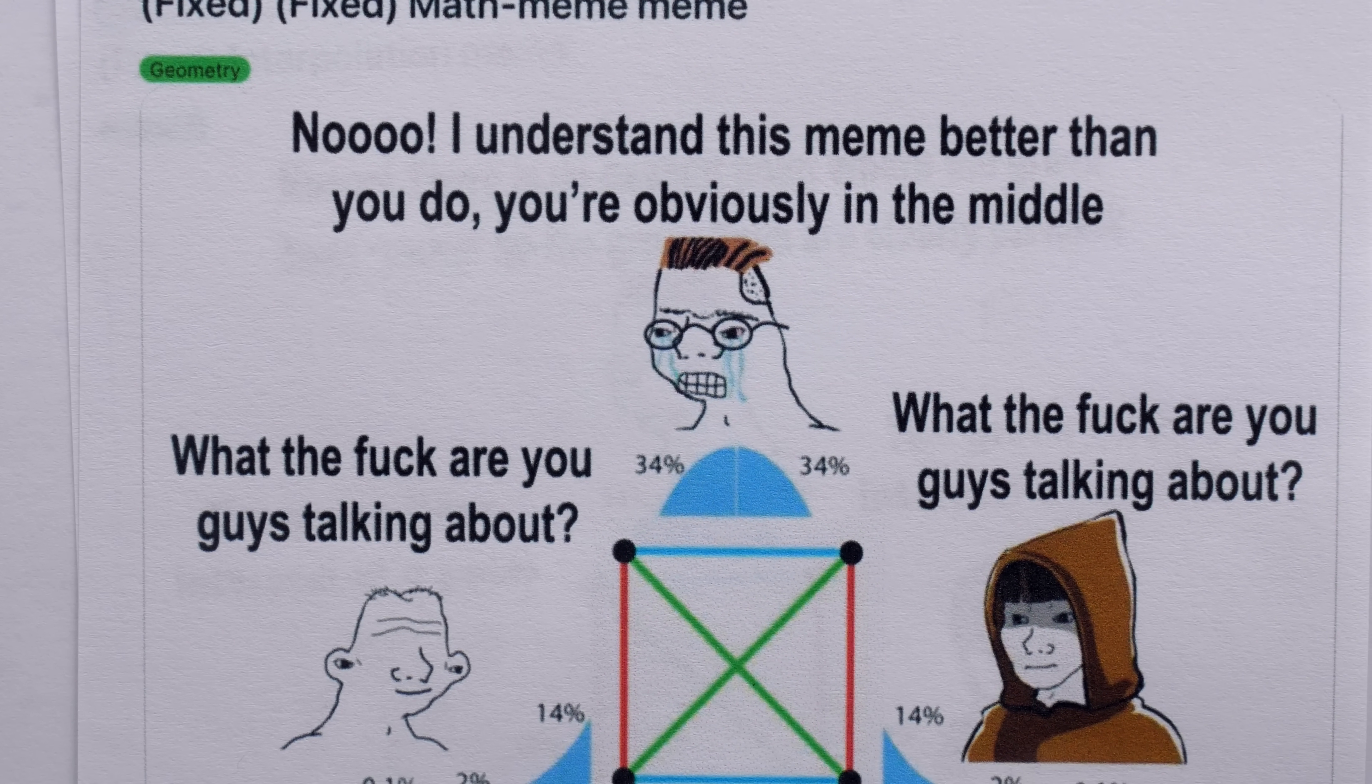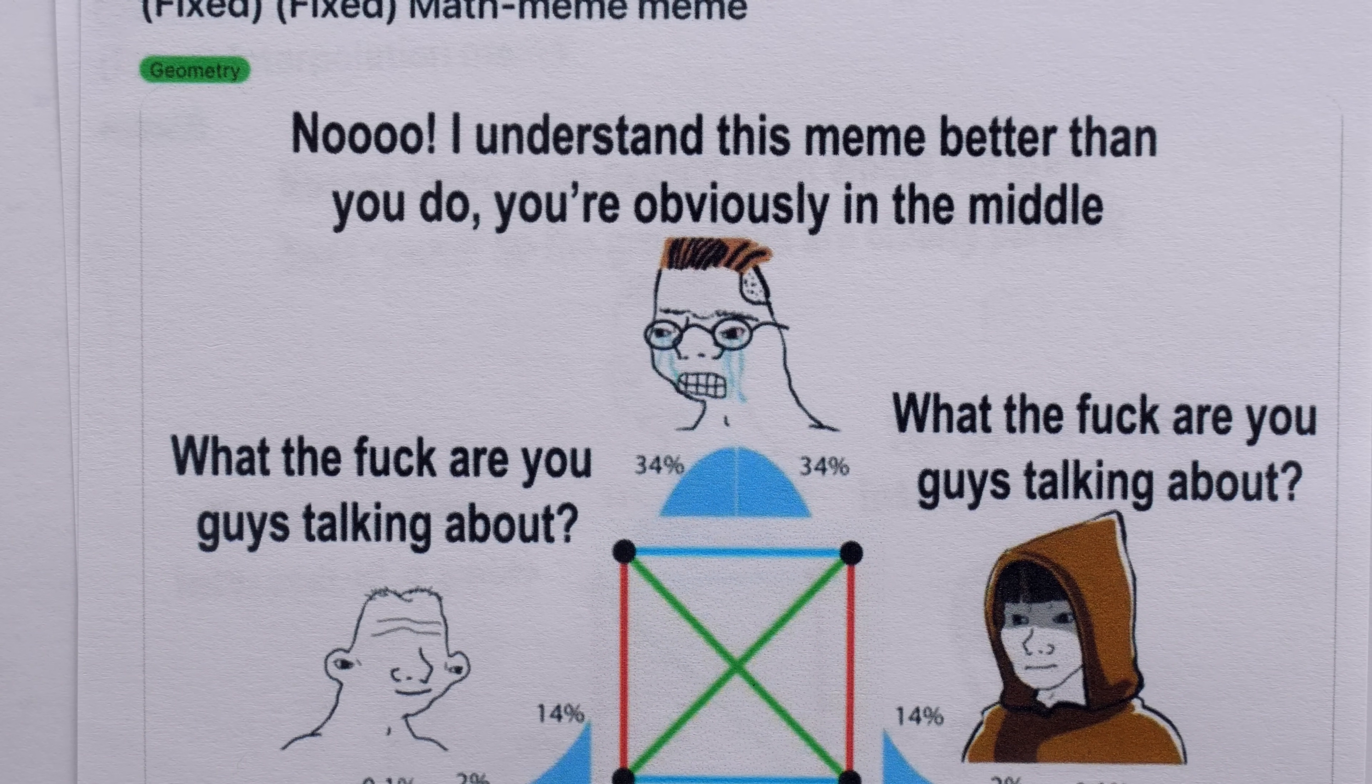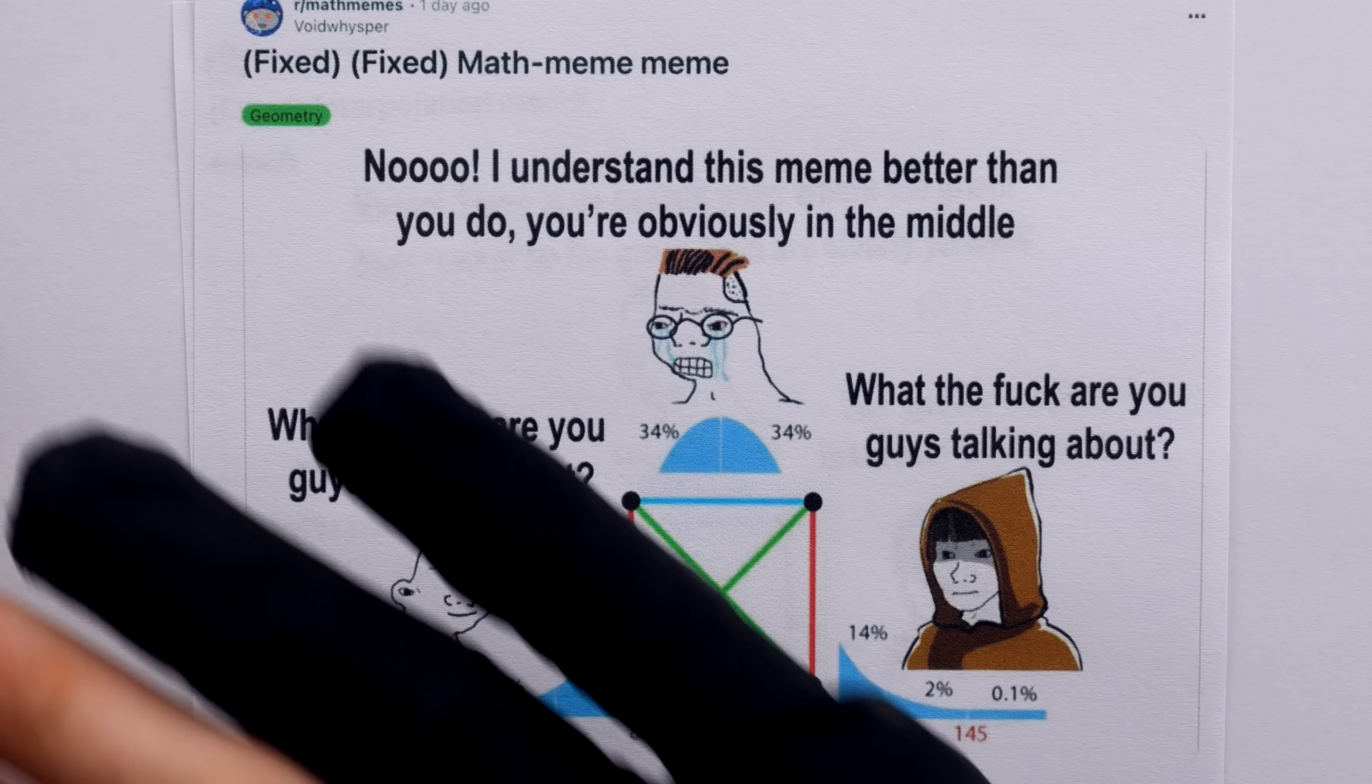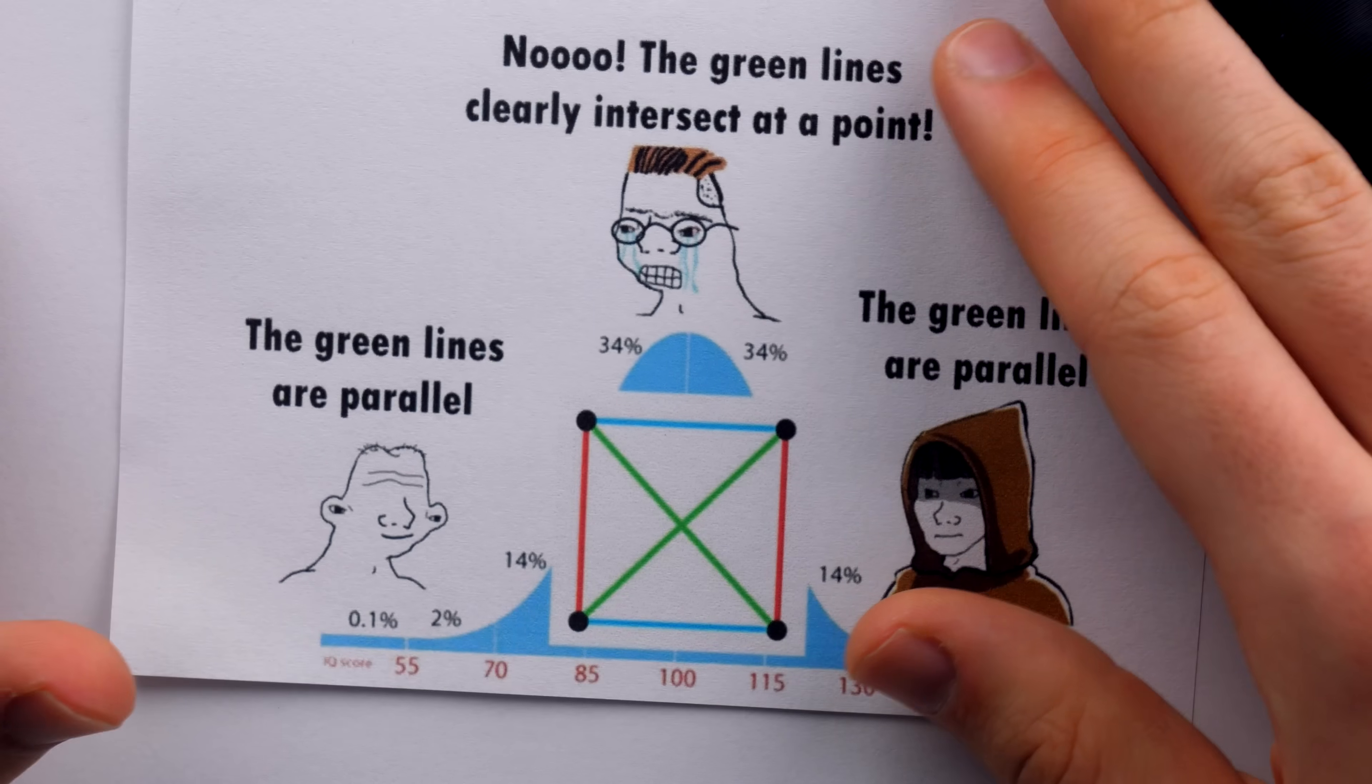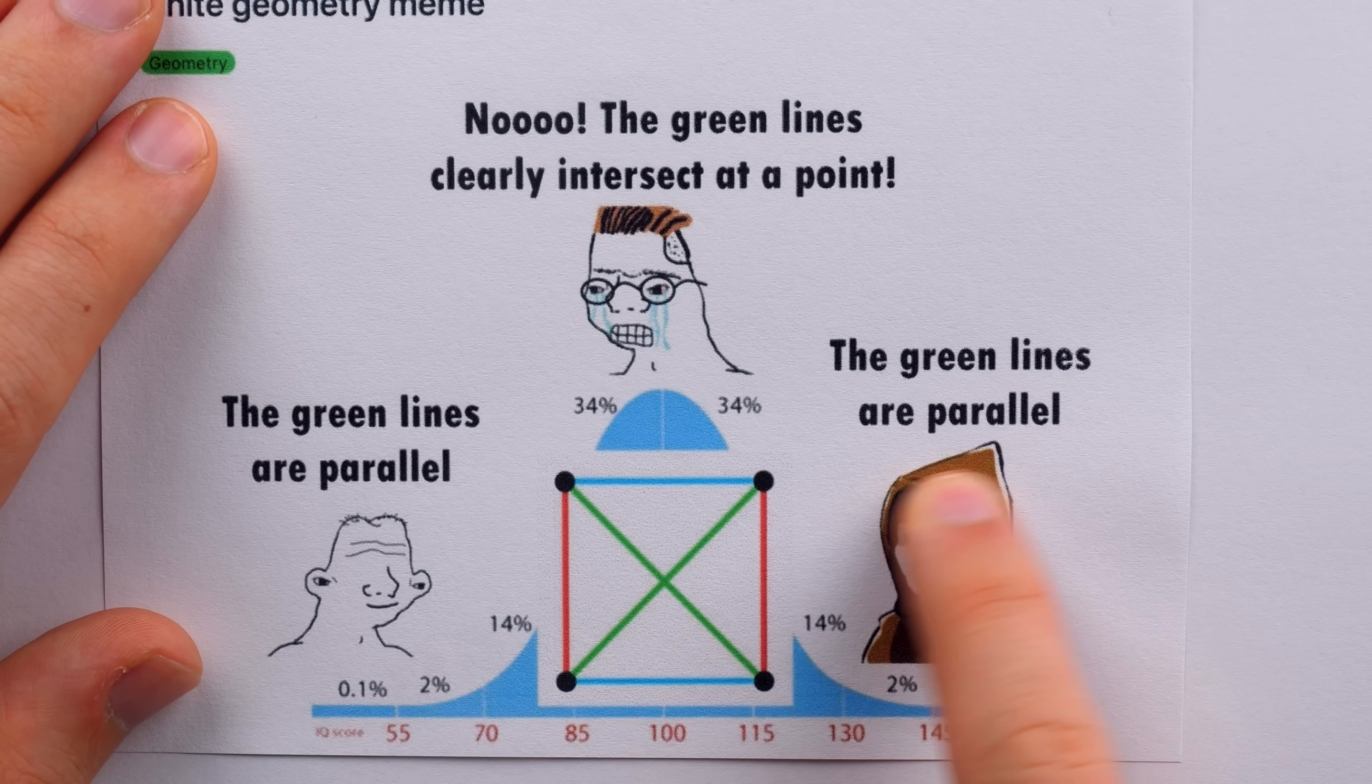This is the fixed fixed math meme meme, where the midwit says, no, I understand this meme better than you do. You're obviously in the middle. And our extreme characters say, what the fuck are you guys talking about? Altogether, an amusing saga, but let's take a look at some geometry to understand why on earth we would consider these green lines to be parallel.